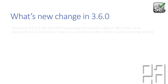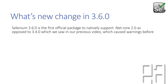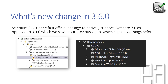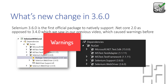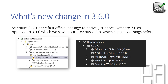What's new in 3.6.0? Selenium 3.6.0 is the first official package to natively support .NET Core 2.0, as opposed to 3.4.0 which we saw in our previous video, which caused some warnings in the references added from the NuGet package. With 3.6.0, you can see in the dependencies on the right-hand side that there are no warnings, meaning it is officially supported with .NET Core 2.0.